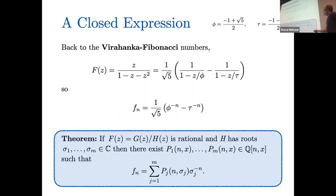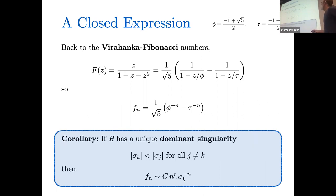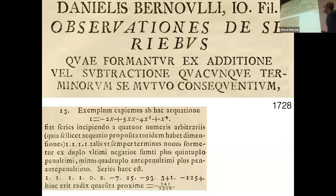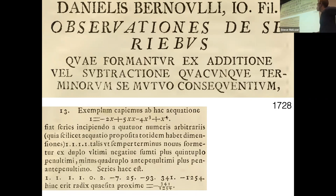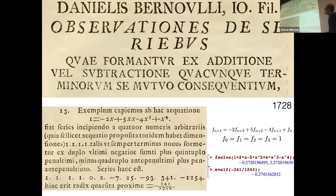For asymptotics, each singularity contributes, and the dominant contribution comes from singularities with smaller modulus — closer to the origin — since those give exponentially larger terms. If you have a unique dominant singularity, you can figure out the asymptotics just by inspection. This is very classical: here's a paper by Daniel Bernoulli from about 300 years ago, where he builds a recurrence whose coefficients come from a polynomial he wants to solve, starts with initial terms 1,1,1, and observes that consecutive ratios of terms converge to the root closest to the origin. This was one of the ways they found numeric solutions to polynomials 300 years ago — already explaining this for computation.